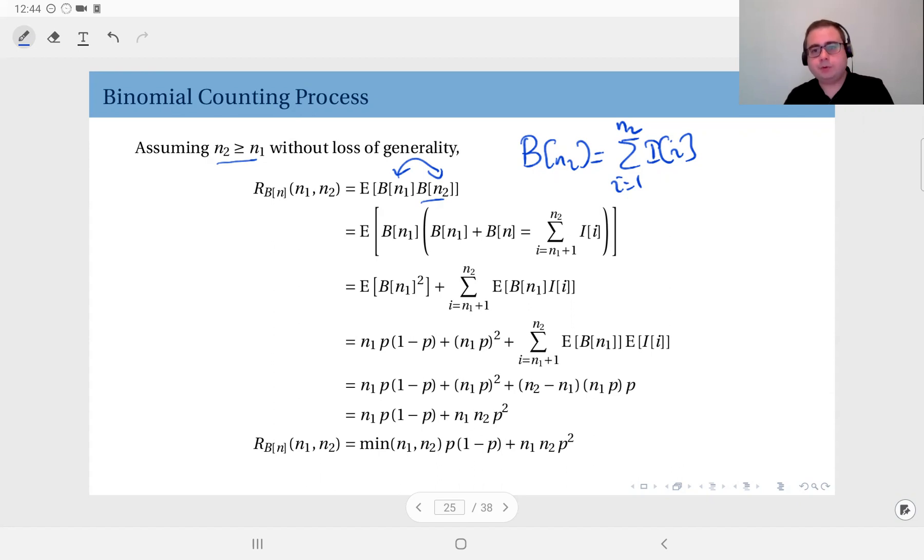The sum from 1 to n1 and the rest. Okay, so I'm going to write b of n2 as b of n1, which is the sum from i equals 1 up to n1, plus the rest from n1 plus 1 up to n2. So this shouldn't be here, sorry about that.